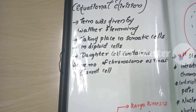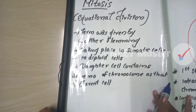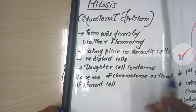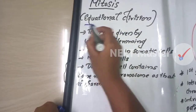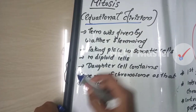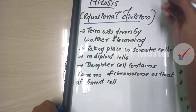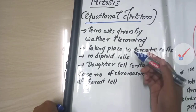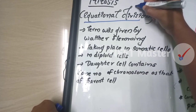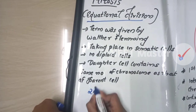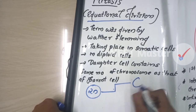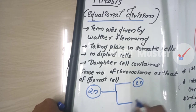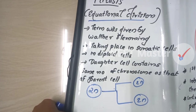Hello friends, now we are going to talk about mitosis. Mitosis is called Equational Division. The parent cells and their chromosomes are equal to the progeny cells and their chromosomes. That is why it is called Equational Division. That is mitosis.